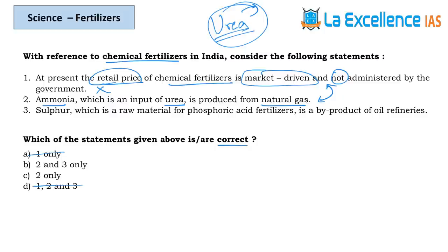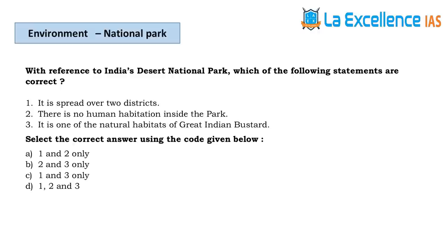Statement 3 — sulfur, which is a raw material for phosphoric acid fertilizer, is a byproduct of oil refineries. Yes, when we have studied automobile exhaust and sulfur dioxide as a pollutant, sulfur dioxide is produced from oil refineries. So the answer for this question is B.